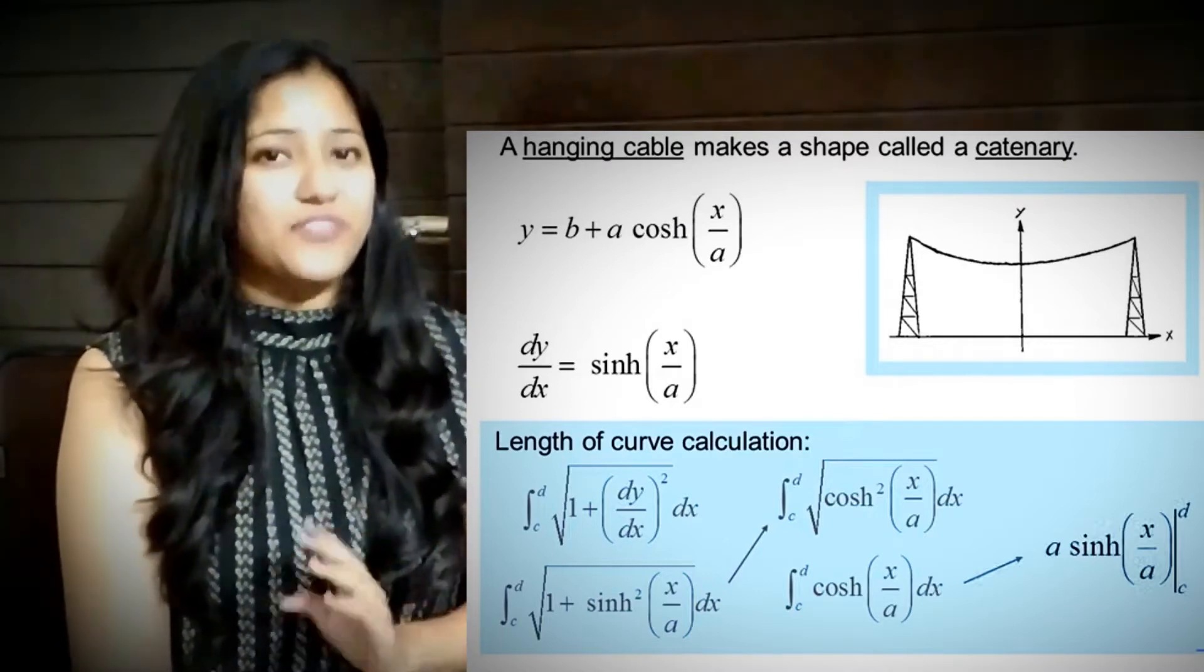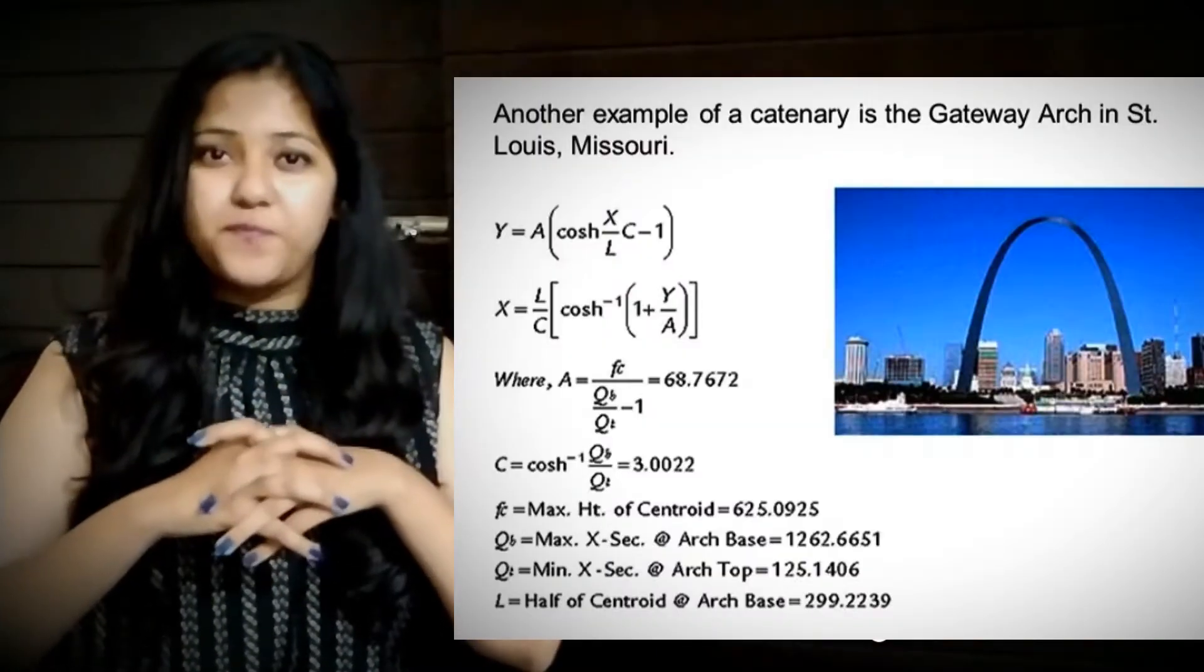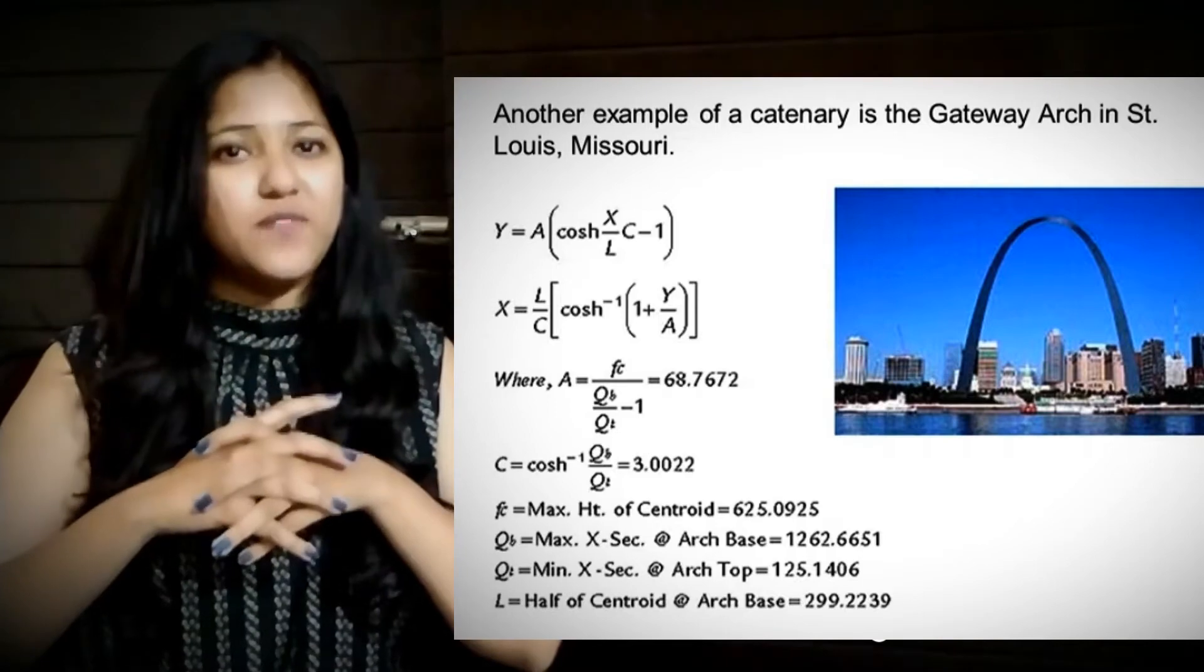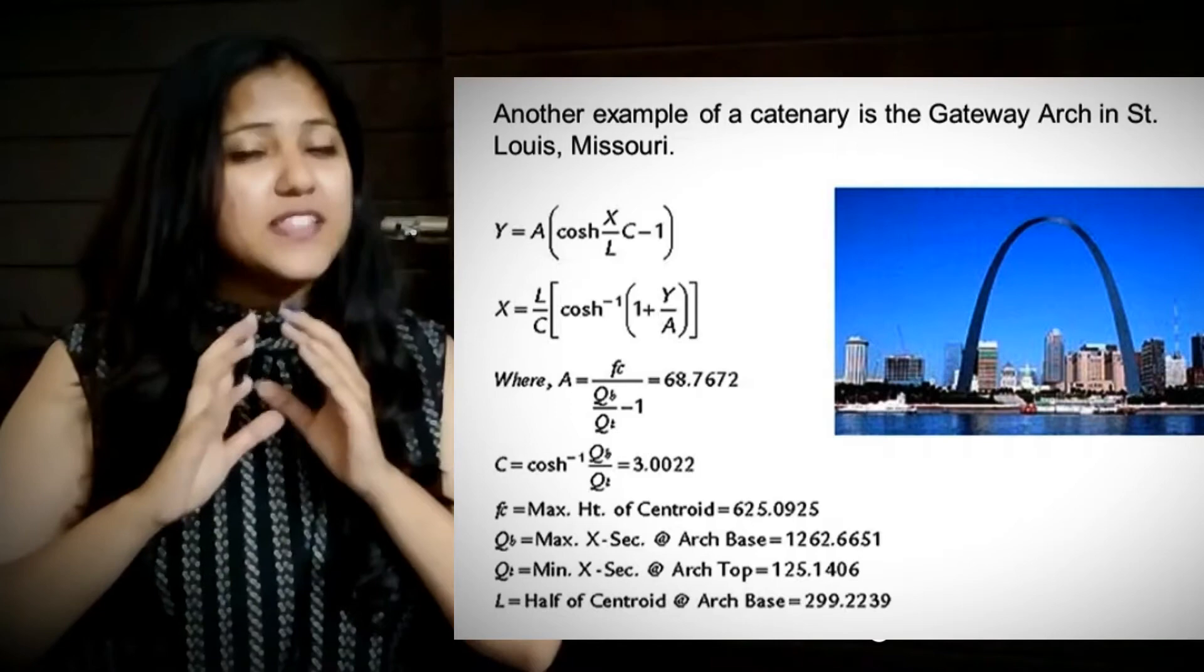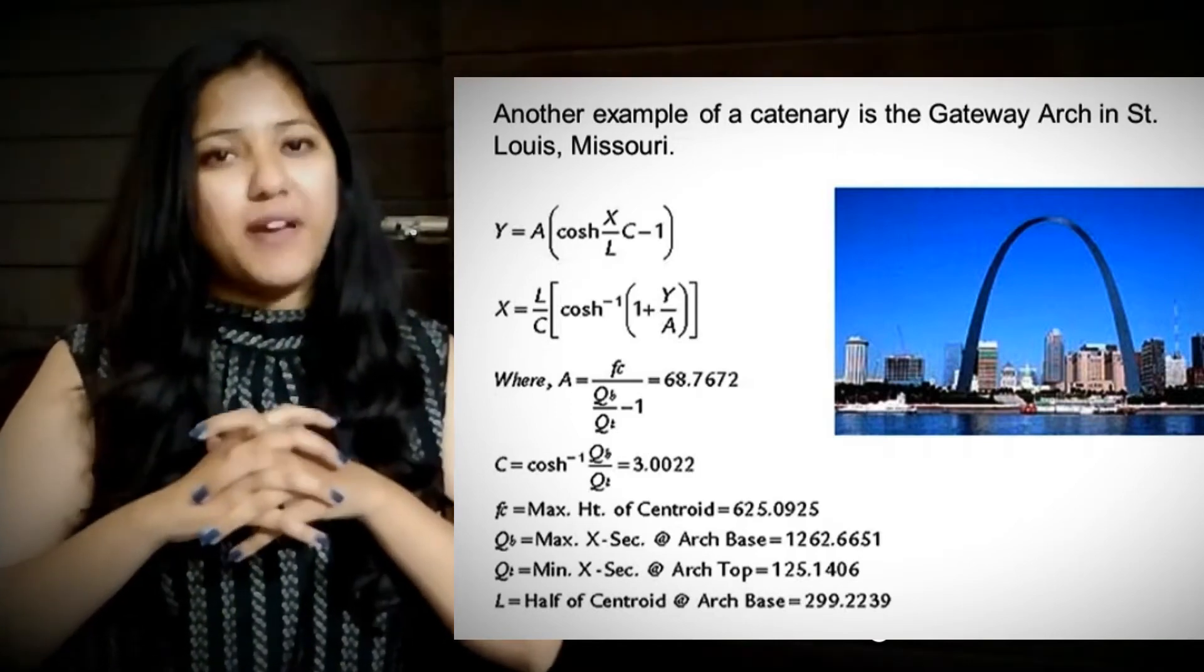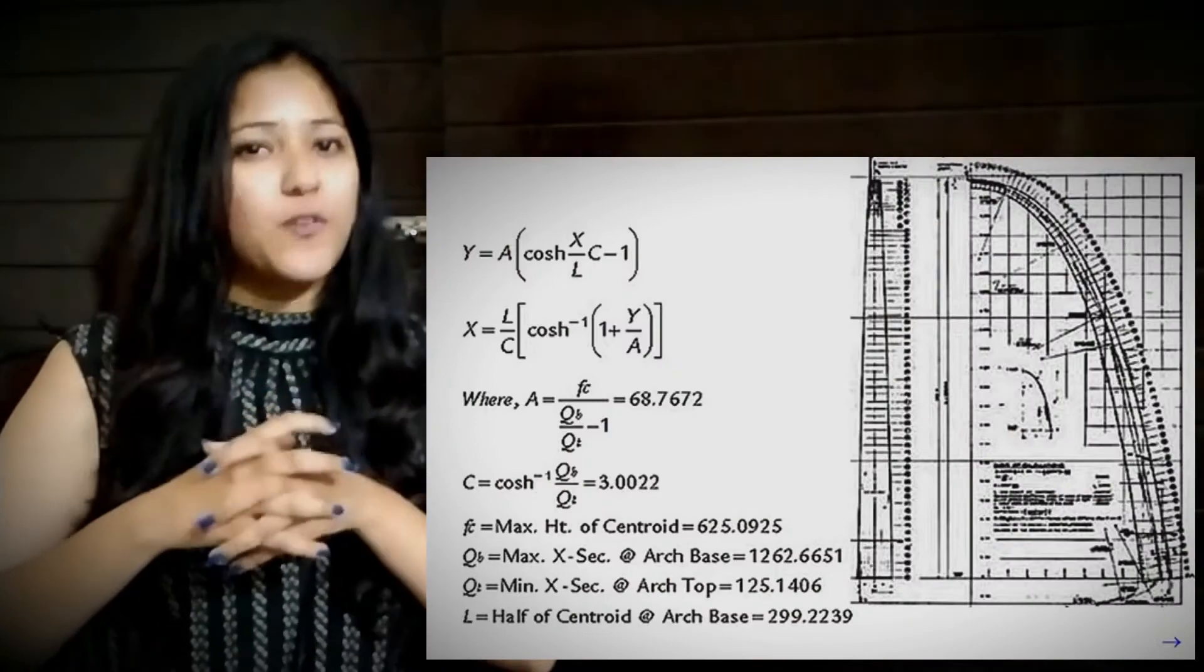A very famous example of a catenary is the Gateway Arch in St. Louis. The equation of the Gateway Arch is given by y = a cosh(x/l) × (c - 1), where a and c are again constants.